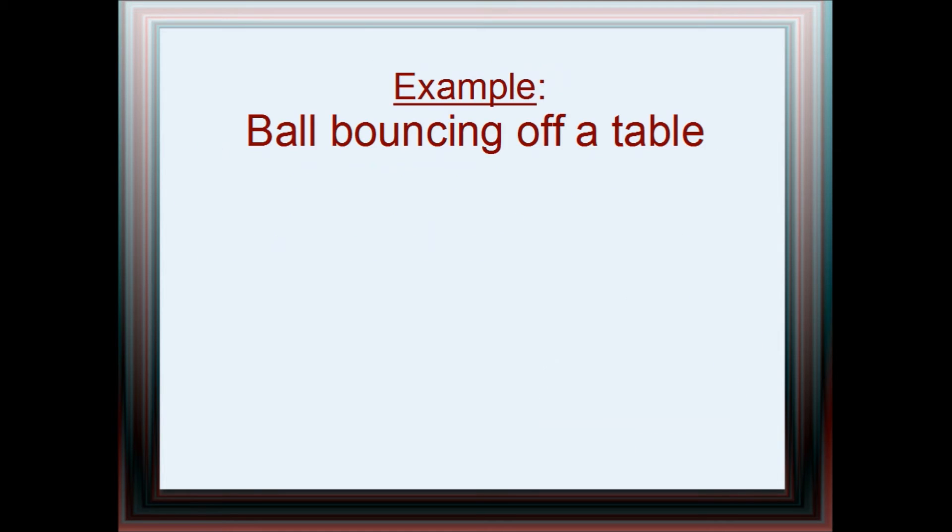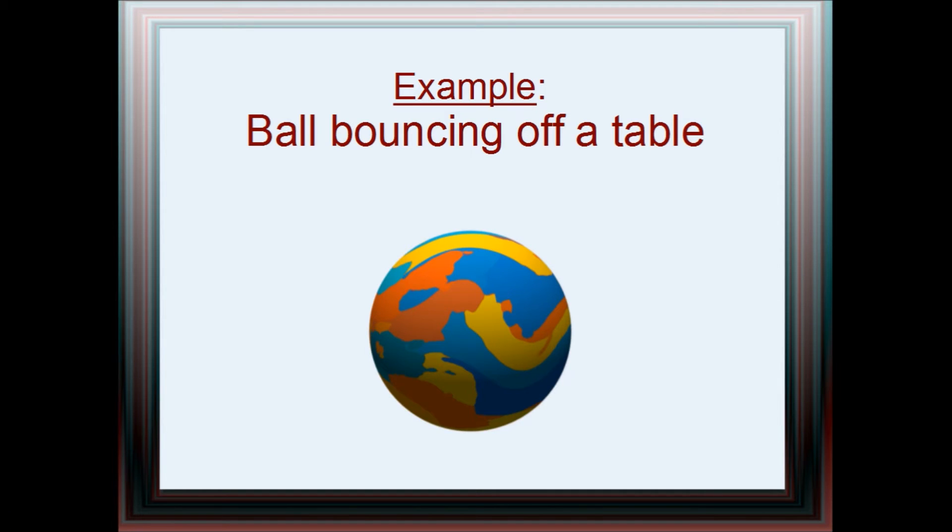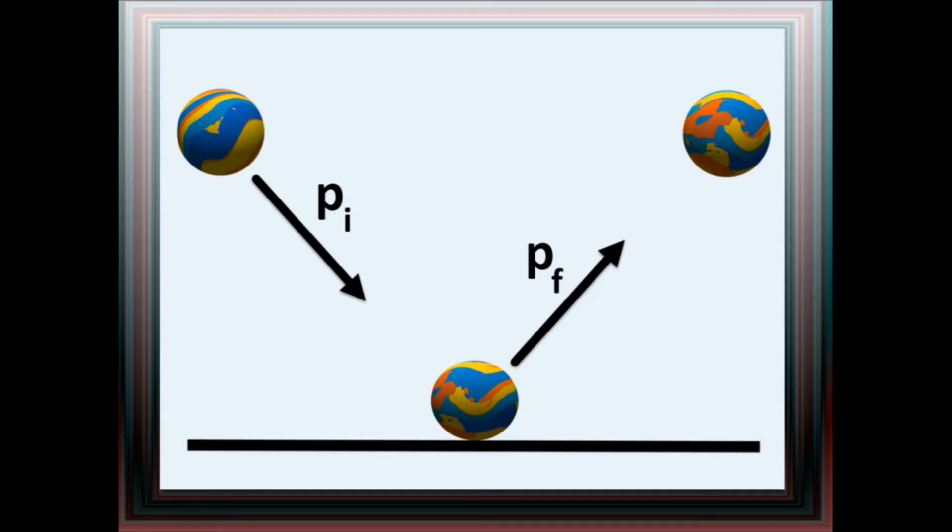Let's look at an example. Consider a ball bouncing off a flat wooden table. Here's my ball, very flamboyantly colored. I'm going to launch it at a table and see what happens. Before it hit the table, the ball had a certain momentum. Let's say that immediately after it bounces, the ball has the same size of momentum but in a different direction.